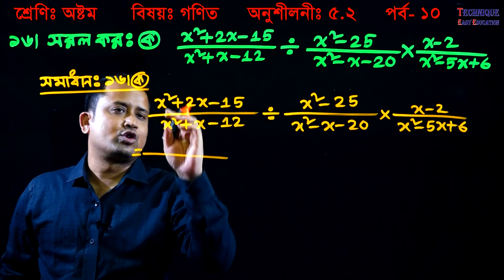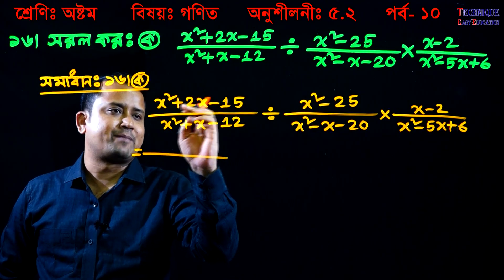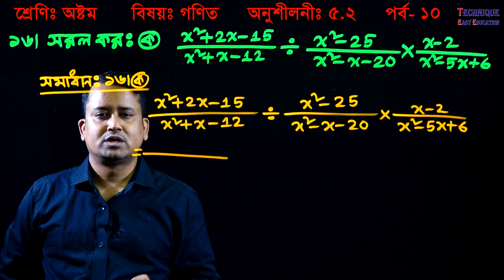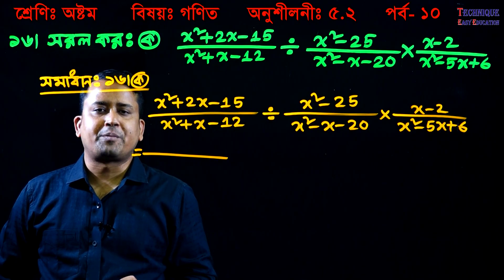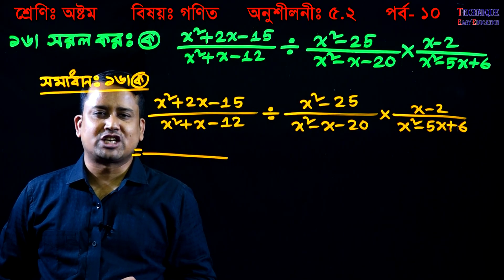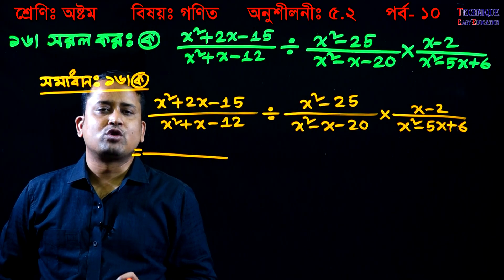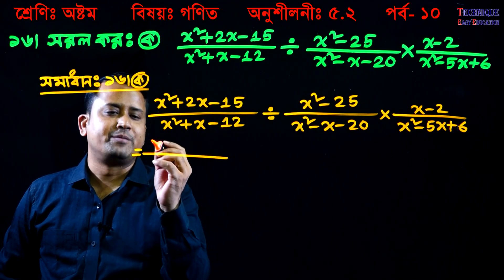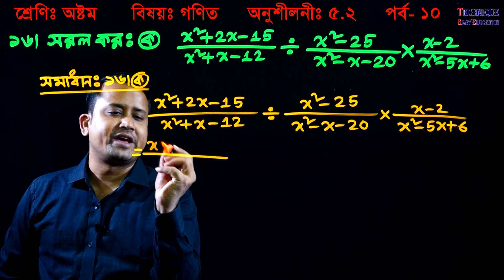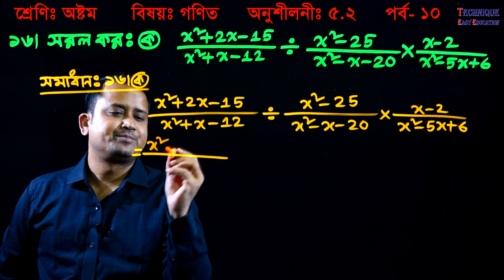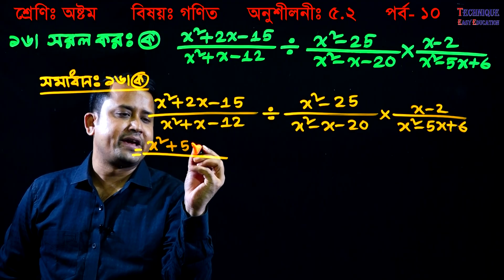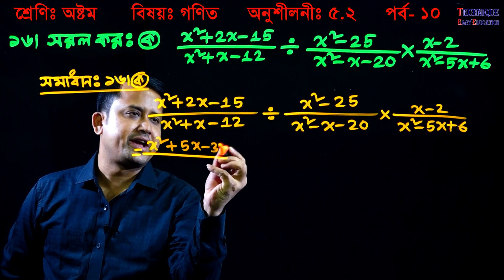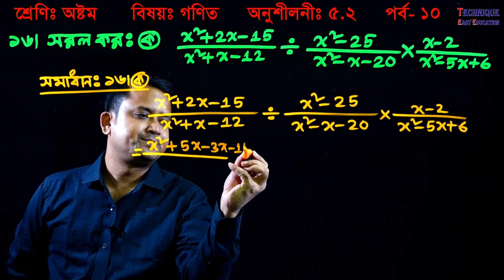What do we do? x squared plus 2x minus 2. In the middle time, you will be able to use the mask. You will be able to use the first time and the second time. Now, x squared plus 5x minus 3x minus 15.